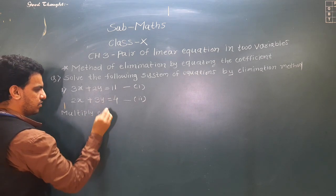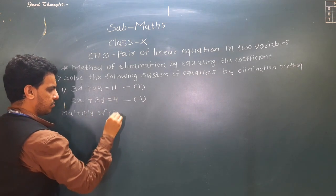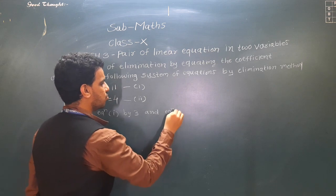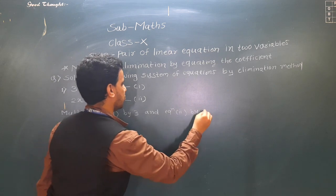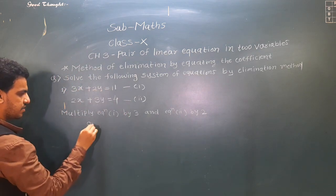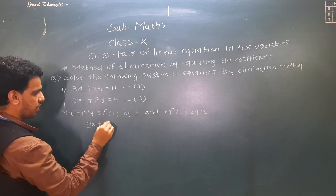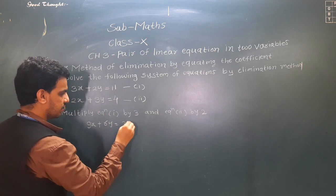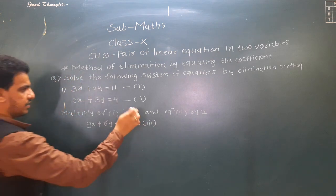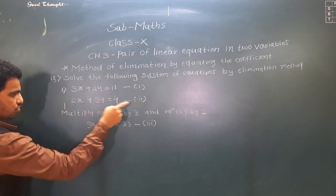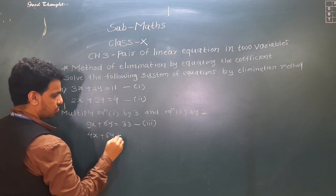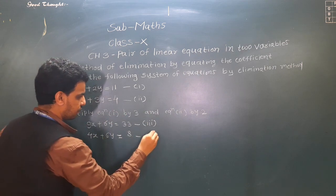Multiplying equation 1 by 3 gives us 9x + 6y = 33 — this is equation 3. Multiplying equation 2 by 2 gives us 4x + 6y = 8 — this is equation 4.